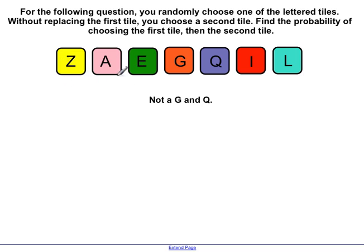So not a G. Well, how many are not a G? One, two, three, four, five, six. So six out of seven are not a G times how many are a Q? And now remember, not a G would be six, but remember, we're taking one out. So say it was Z. So Z is now out of the picture. That leaves only six left over because you didn't replace it.